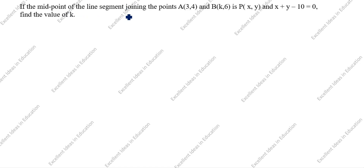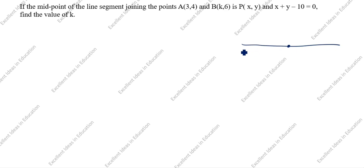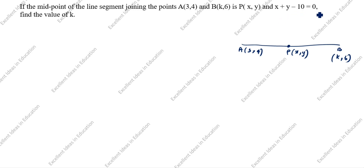If the midpoint of the line segment joining the points A(3, 4) and B(k, 6) is P(x, y), where A is given as (3, 4), B is given as (k, 6), and the condition x plus y minus 10 is equal to 0 — find the value of k.